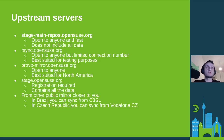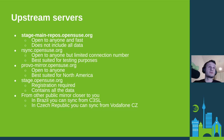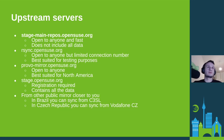There is also stage.opensuse.org, which has all the data, but this requires registration — it's not open to everyone; you need to create a ticket and request access. You can also fetch from other public mirrors that are close to you if they provide rsync capabilities. For example, in Brazil you can sync from C2ESL, possibly the biggest mirror in South America, and in Czech Republic you could mirror from Vodafone CZ.